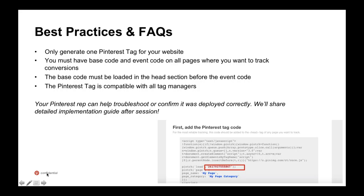A few best practices and FAQs: you only need one Pinterest tag for your website — generate one base code and put it across your entire site. The base code must be added to every page where you want to track conversion events, enabling audience lists and visitor retargeting. On pages where you want to track conversions, add a second piece of code — our event code. The base code must load before the event code. We have a detailed guide for developers explaining how to implement the code, and we'll follow up with resources to implement the Pinterest tag.